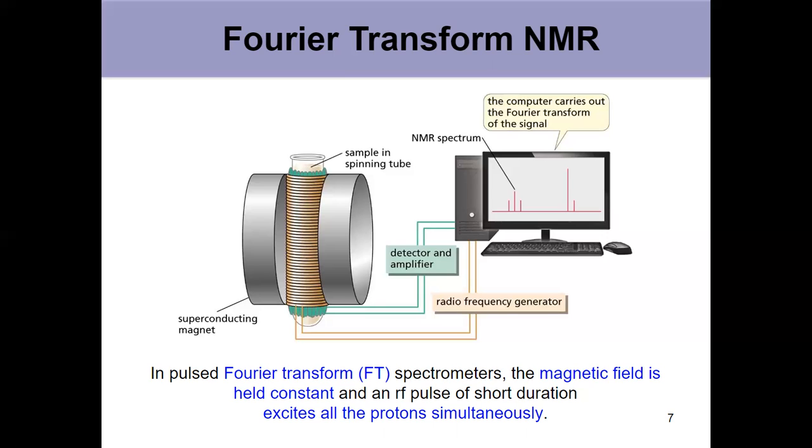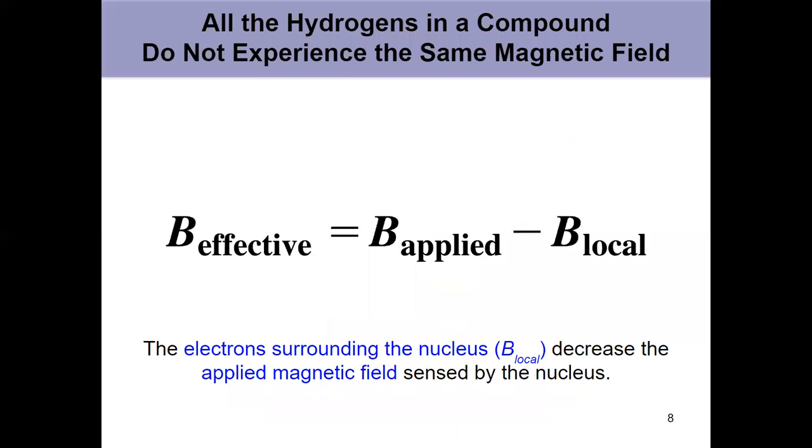But of course, if we're trying to get information about a molecule, then something has to be different. Why are these things showing up in different spots? Because if every proton was the same, this would be useless. And they're different. And we get different readings for different hydrogens or whatever we're looking at with NMR. Every atom in a molecule has a different environment.